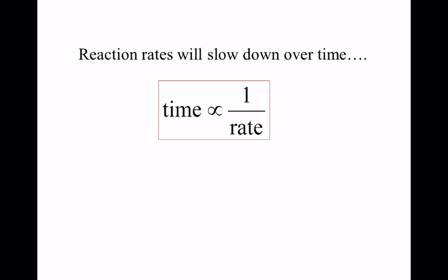When we talked about gas laws, we talked about direct relationships and inverse relationships — something's directly proportional or inversely proportional. If temperature goes up, pressure goes up. Number of moles goes up, pressure goes up. Volume and pressure are inversely proportional: if you decrease the volume of a gas, you increase the pressure. As it turns out, the rate at which a reaction occurs and the time over which it's occurring are inversely related — inversely proportional.